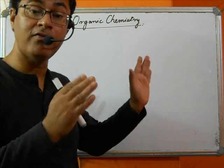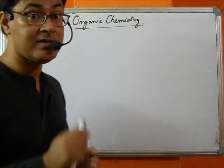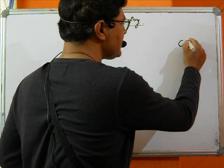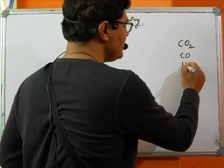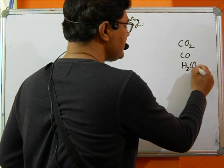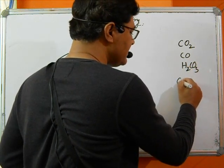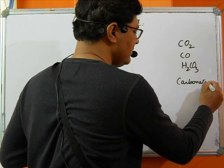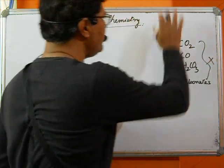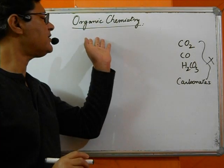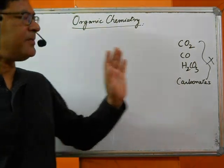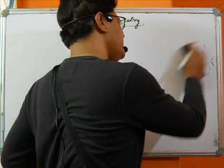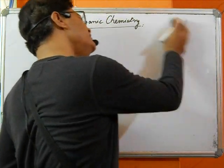Now, when discussing this, please remember that compounds such as carbon dioxide, carbon monoxide, and carbonic acid do not fall into the branch of organic chemistry. Organic chemistry deals with carbon having a few specific properties.